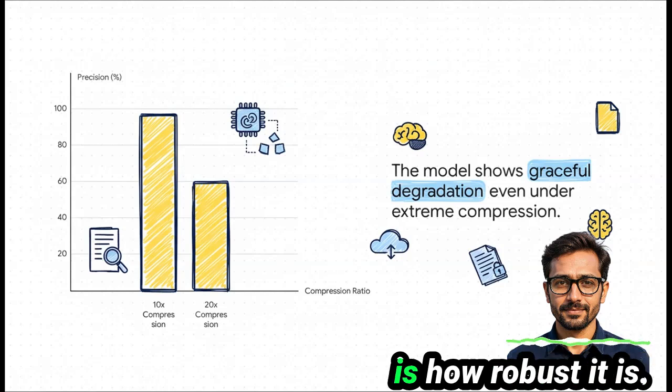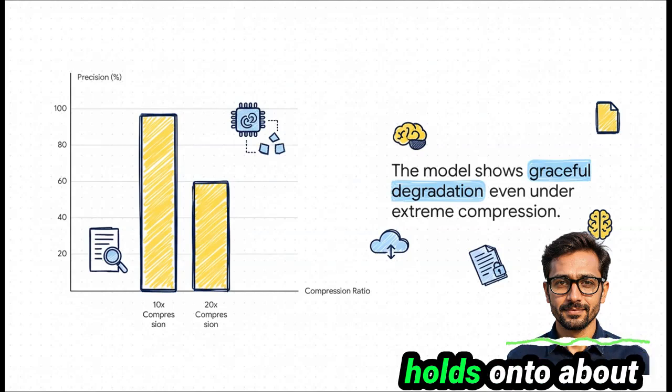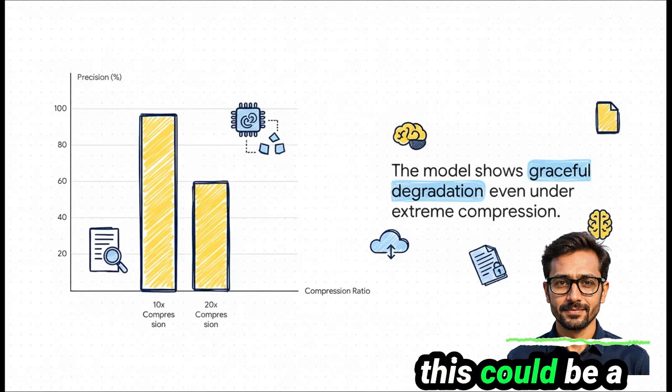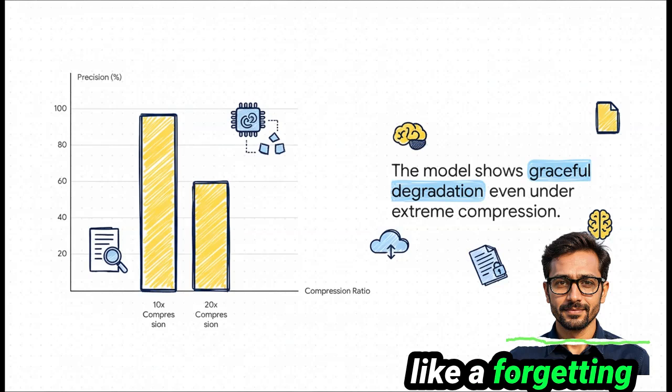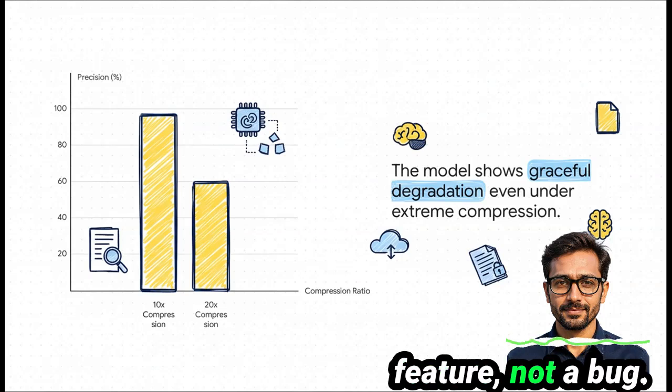And what's really cool is how robust it is. Even if you push it to a crazy 20x compression, it still holds on to about 60% accuracy. The researchers even think this could be a useful feature, like a forgetting mechanism for less important stuff and super long documents. It's almost a feature, not a bug.